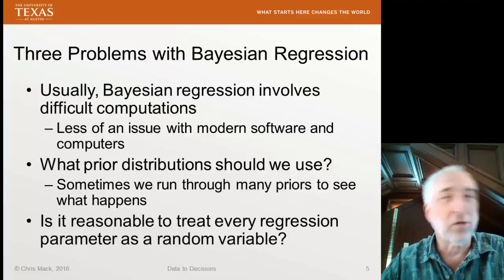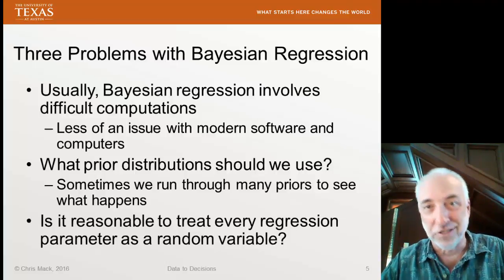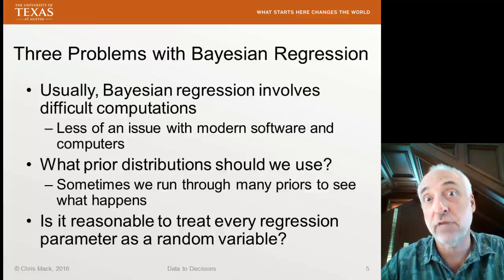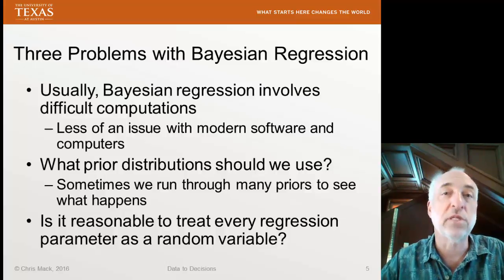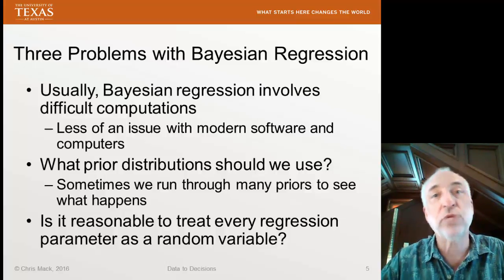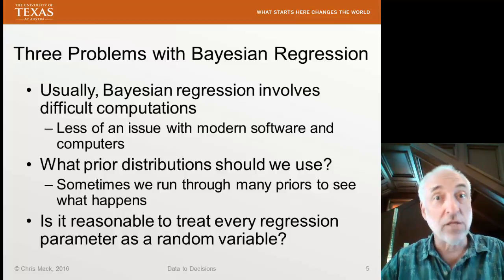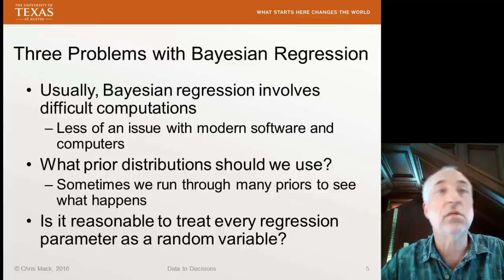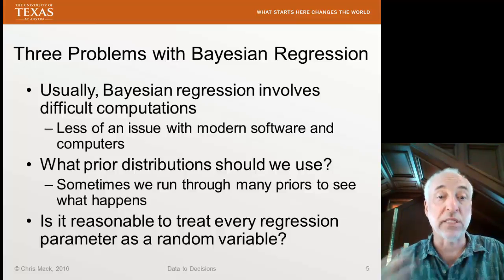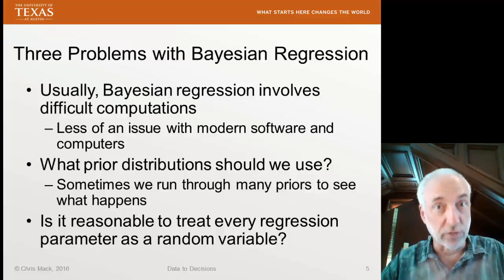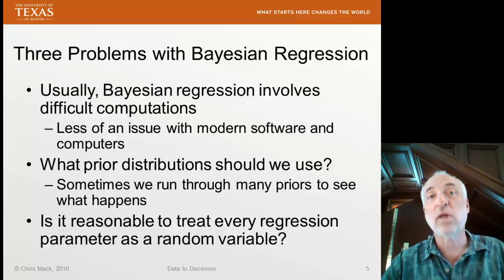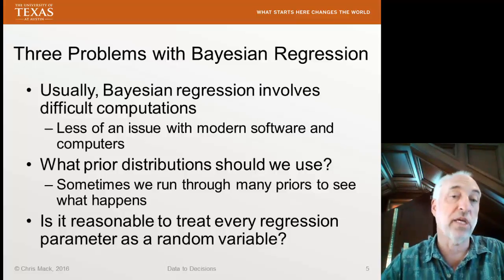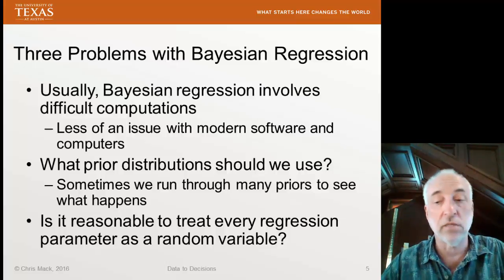There are also interesting philosophical questions to consider, such as: is it really appropriate to treat every regression parameter as a random variable? In the frequentist view, we treat parameters of our model as unknown constants. In the Bayesian view, we treat these parameters as probability distributions — random variables with a PDF. When is one approach more appropriate than the other for a specific problem context? That's always something worthwhile keeping in mind.